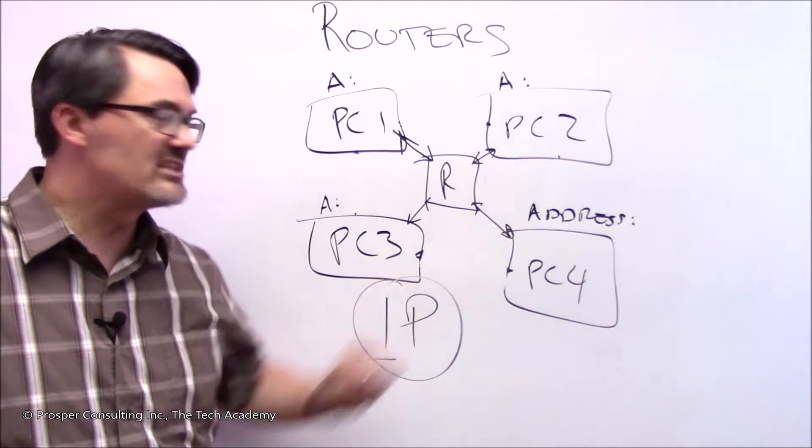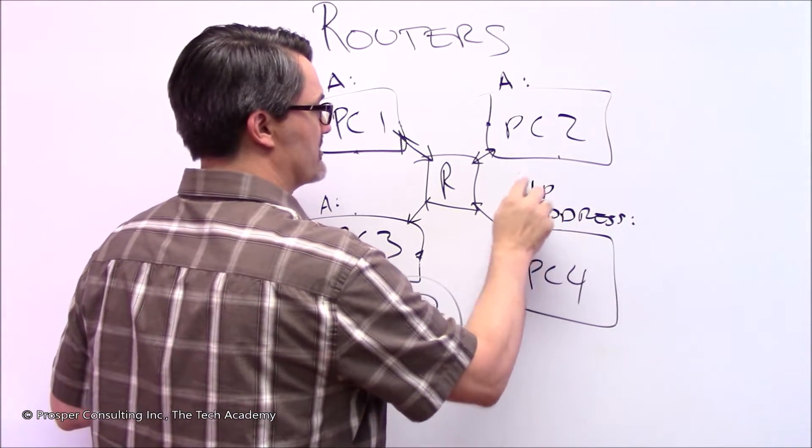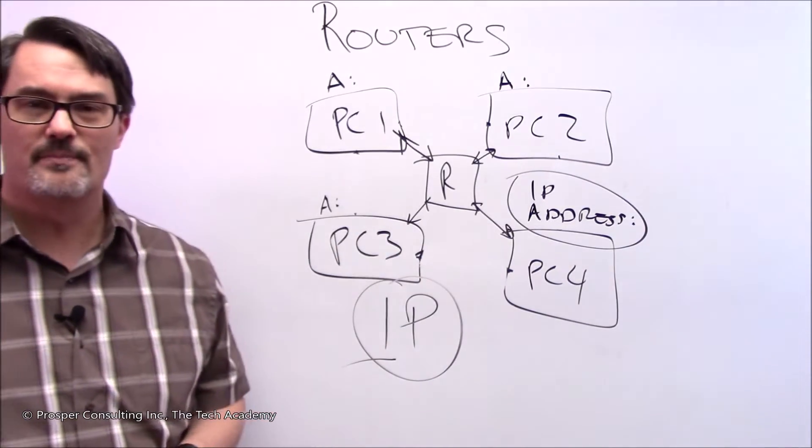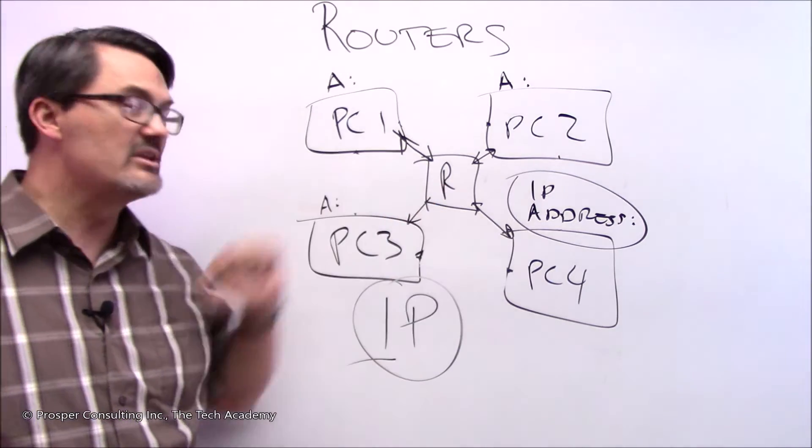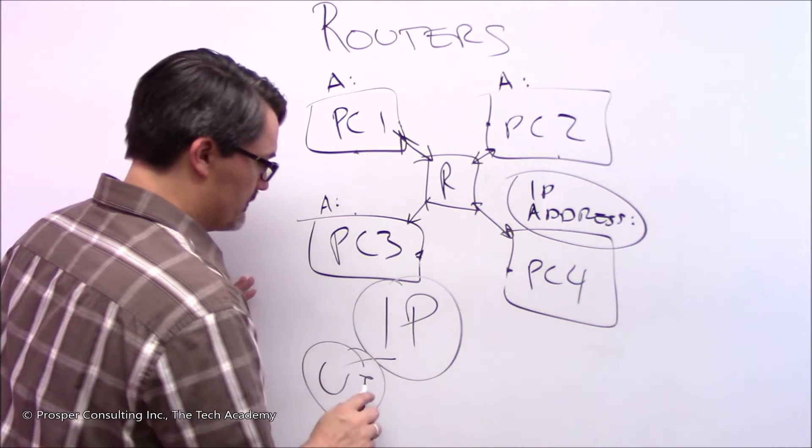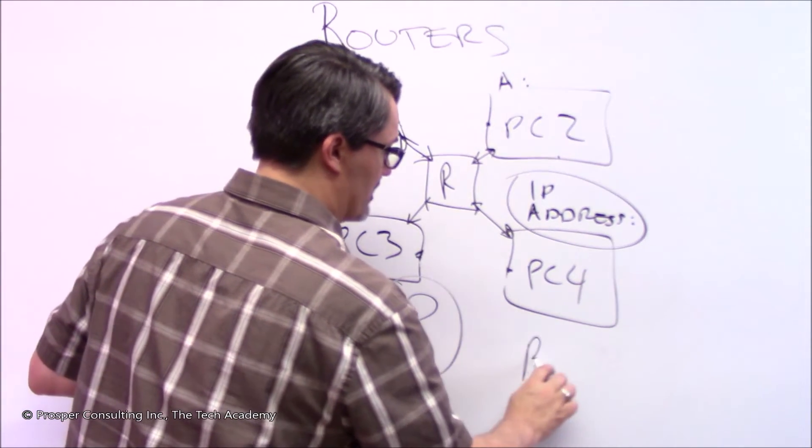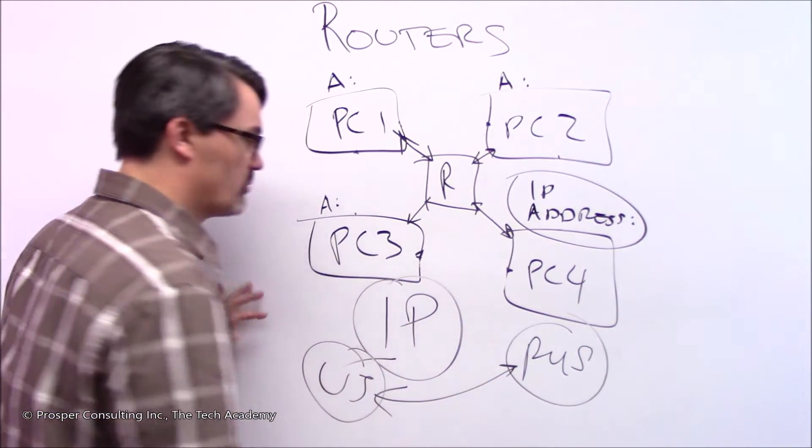So each computer in the world will have an IP address, an internet protocol address. No two computers will have the same address. And that way, even if you're dealing with a network that's billions of times more complex than this, you can actually have a computer in the United States get the internet protocol address for a computer in Russia and have communication occur between them.